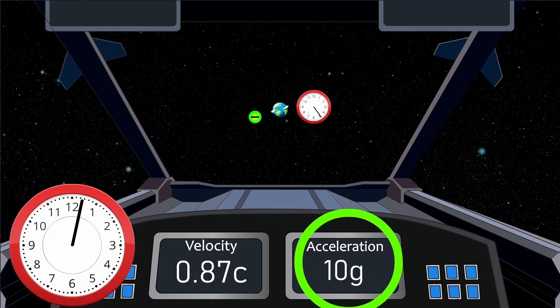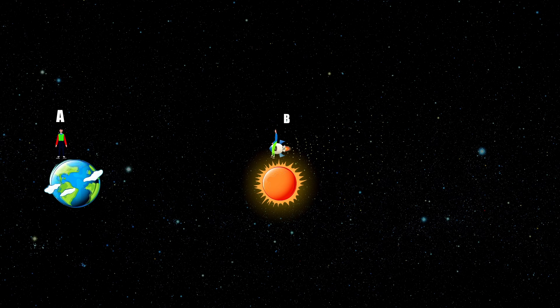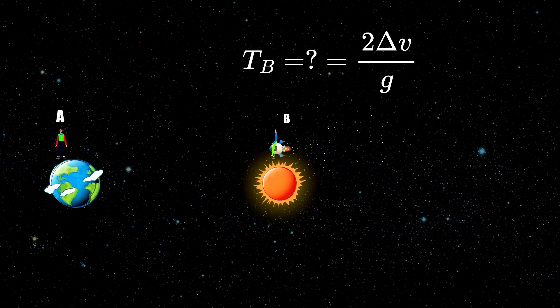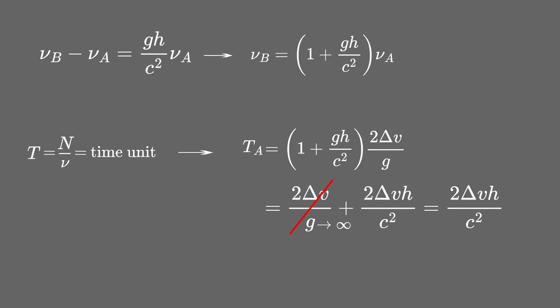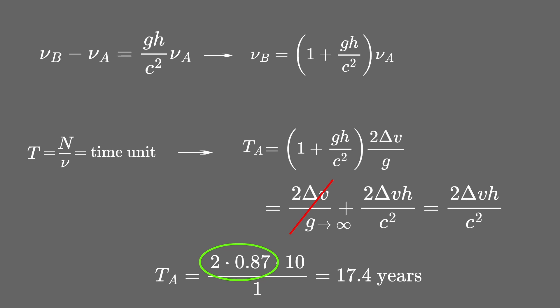G here is the proper acceleration of observer B. The duration of the acceleration is simply the change of velocity divided by the proper acceleration. Plugging it in gives an expression, and making the consideration that the acceleration happened very fast compared to the duration of the trip — taking the limit as G goes to infinity — you get the amount of time that passed on Earth due to the change of frame of reference of observer B. The total change in velocity is twice 0.87c, and the rest length between the two points is 10 light years, so you eventually get the missing 17.4 years.